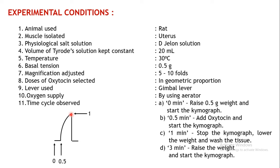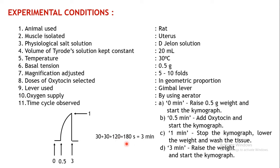At 1 minute, stop the chymograph, lower the weight, and wash the tissue. Around 3 minutes, after 2 minutes of washing, raise the weight and start the chymograph for the next baseline. So 30 seconds are required to record the baseline, 30 seconds to record the response, and 120 seconds for washing — totaling 180 seconds, or 3 minutes, to record one particular response.